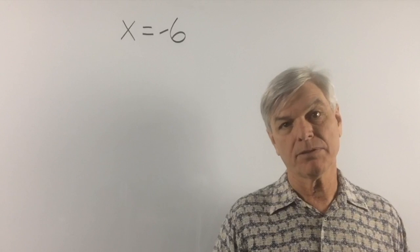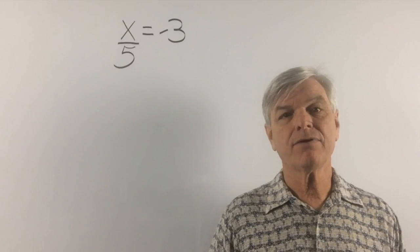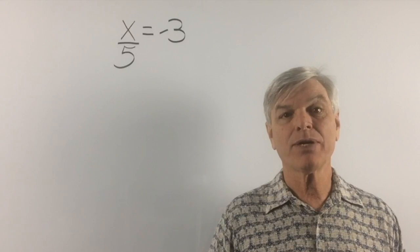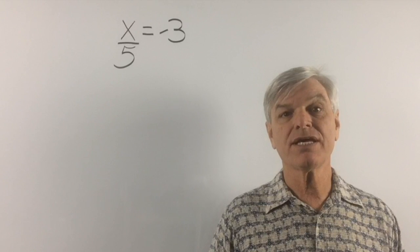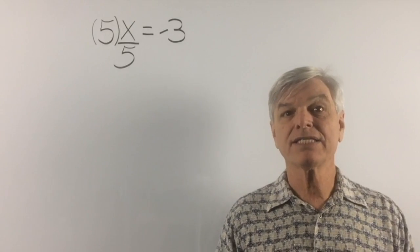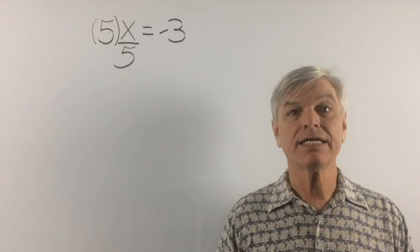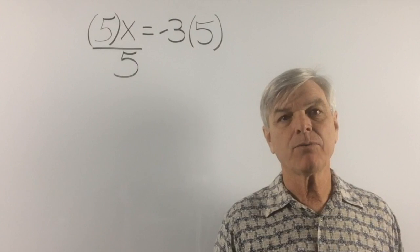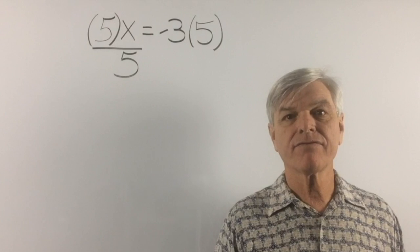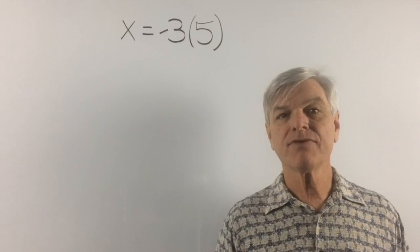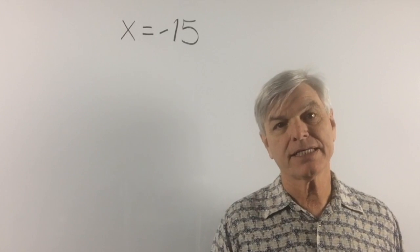Let's try division problems. We have x over 5, or x divided by 5, equals negative 3. When x is divided by a number, we get rid of it by multiplying by the same number — we do the inverse, the opposite. We have a 5 on the bottom, so let's multiply by 5 on top — that's times 5, not plus 5. Whatever we do to the left-hand side, we do to the right. 5 over 5 is 1x. Negative 3 times 5 is negative 15. x equals negative 15.